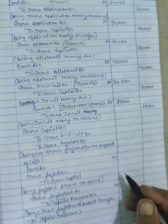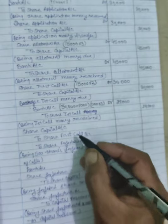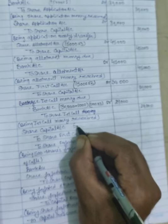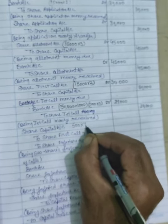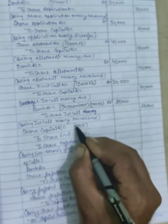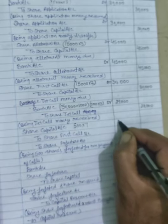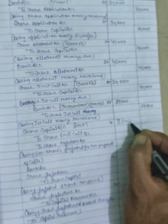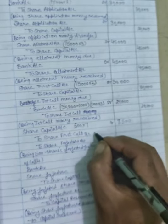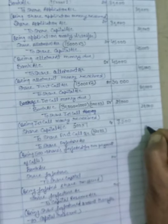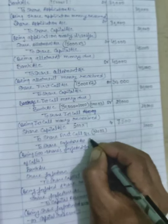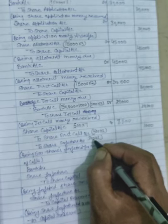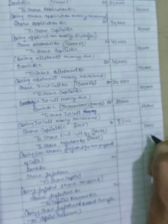Immediately after first call, these shares were forfeited. Call up amount received was Rs.7 per share - Rs.2 application + Rs.3 allotment + Rs.2 first call. So 500 shares at Rs.7 = Rs.3,500: share capital debited Rs.3,500. First call not received: 500 shares x Rs.2 = Rs.1,000. Amount received: 500 shares x Rs.5 = Rs.2,500.